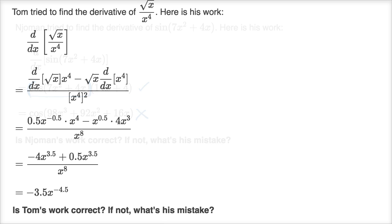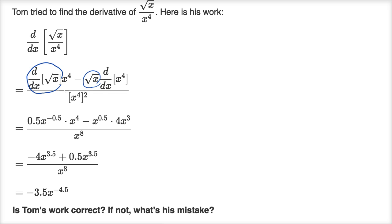Let's do one more of these — I find these strangely fun. Tom tried to find the derivative of the square root of x over x to the fourth. Here is his work. Is Tom's work correct? If not, what's his mistake? It looks like he's trying to apply the quotient rule. Applying the quotient rule, in the numerator you take the derivative of the numerator expression times the denominator expression, minus the numerator expression times the derivative of the denominator expression, all of that over the denominator expression squared. This looks correct — it's a correct application of the quotient rule. The derivative of x to the one half is one half x to the negative one half — so that looks right. Derivative of x to the fourth is four x to the third — so that looks right.